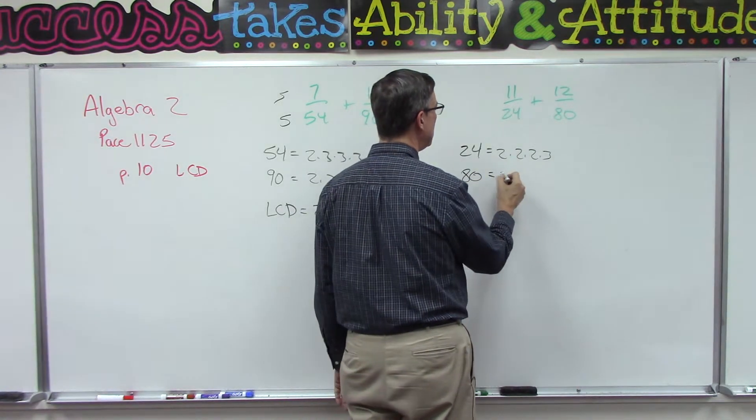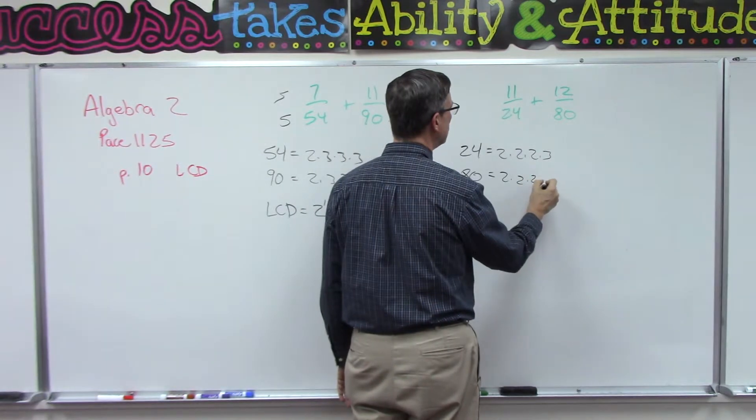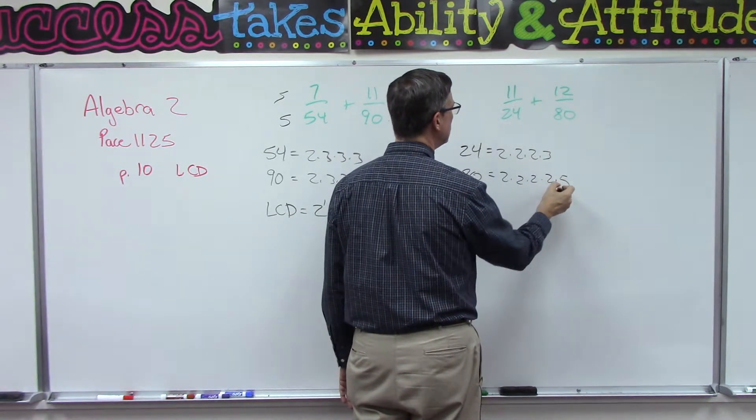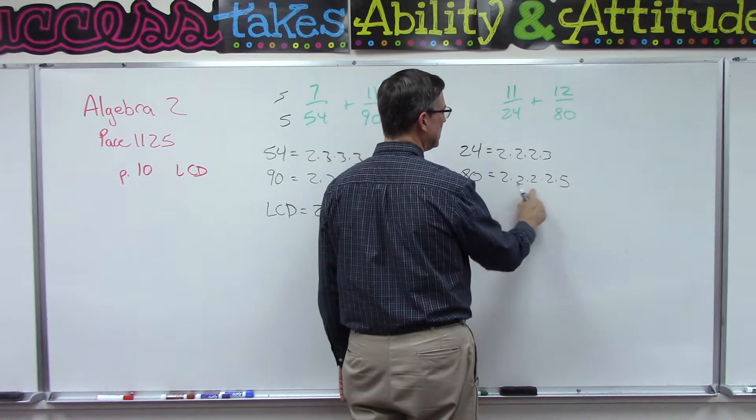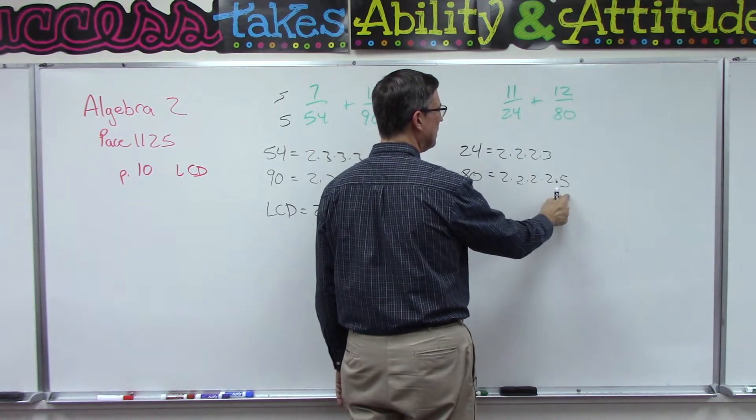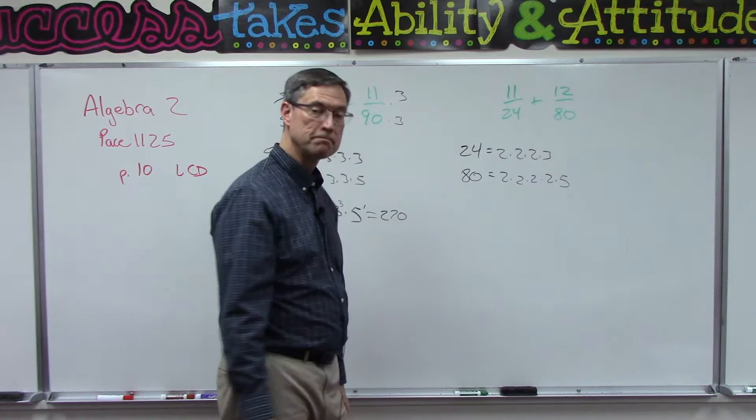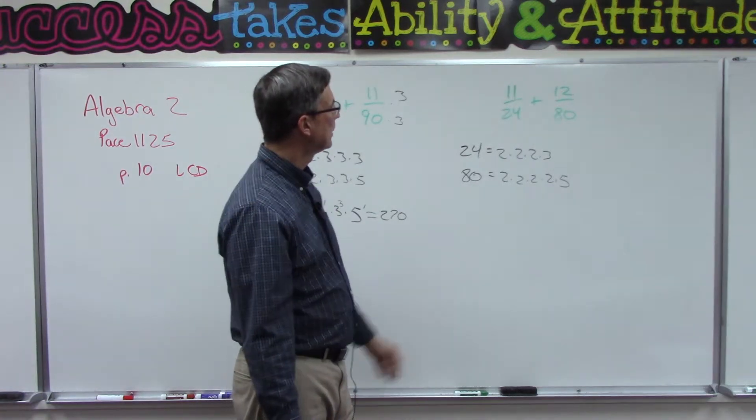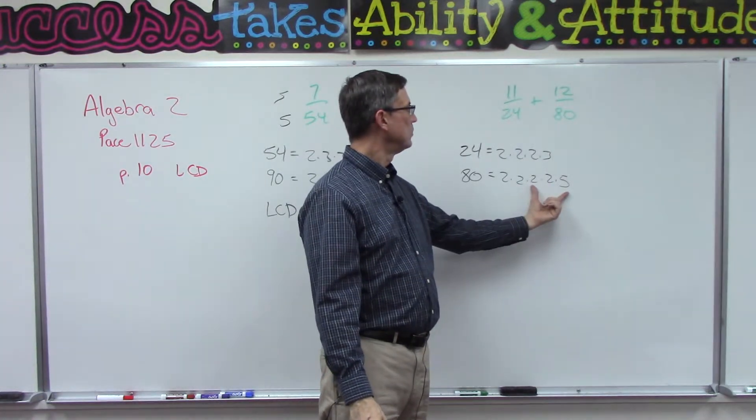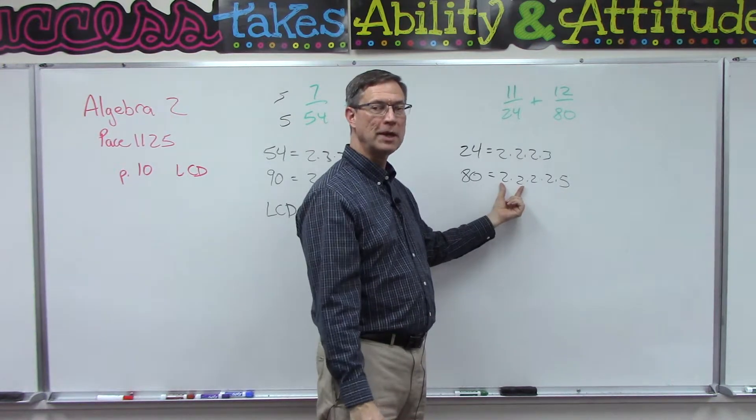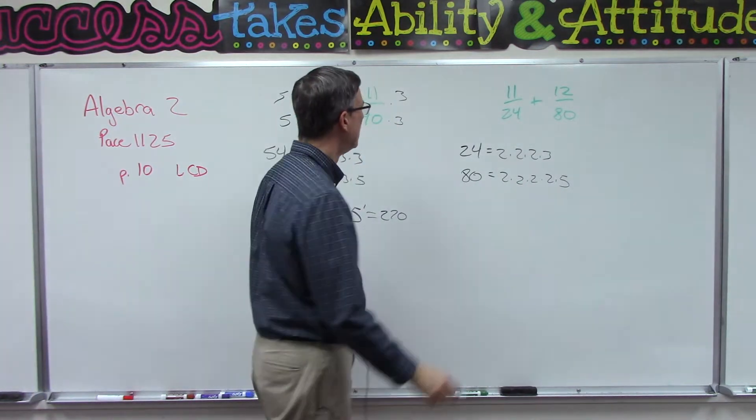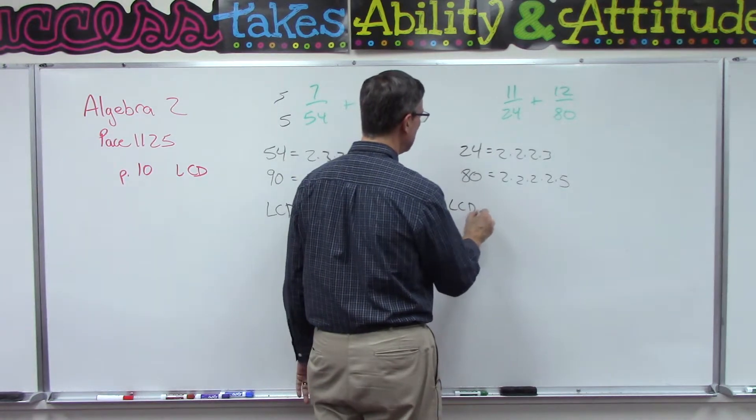80, I'm thinking about 8 times 10. 8 is 2 times 2 times 2, and then 10 is 2 times 5. Or if you think about this, this is 16 times 5 which is 80. So there's different ways of thinking about it. This would be 20 times 4, that would also give you 80.